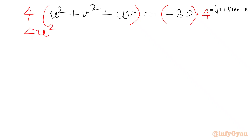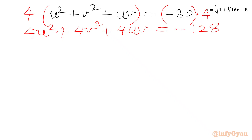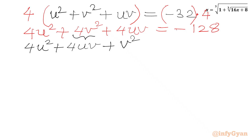We can write 4u squared plus 4v squared plus 4uv in LHS, and in RHS this will be equal to minus 128. Now I will split 4v squared: we can write 4u squared as it is, 4uv as it is, and then write 4v squared as v squared plus 3v squared, giving us 4u squared plus 4uv plus v squared plus 3v squared equal to minus 128.